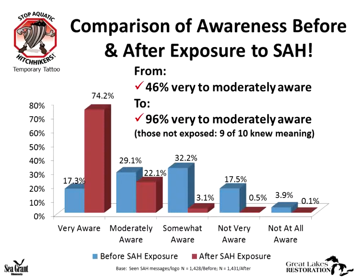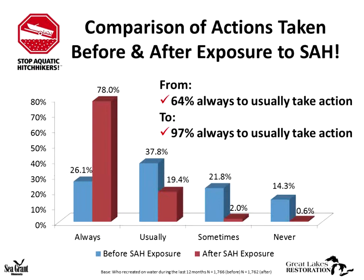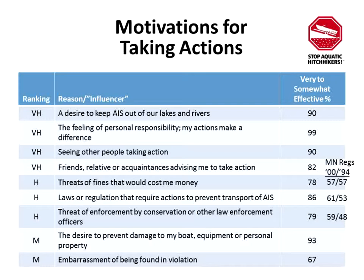We asked anglers about awareness before and after exposure to the Stop Aquatic Hitchhikers campaign. Anglers went from 46% very to moderately aware before exposure to 96% very to moderately aware after. This shows the value of capitalizing on the campaign brand to extend prevention messages and promote awareness. We then asked about behavior — before exposure, 64% always to usually took action; after exposure, 97% said they would always to usually take action in the future, showing that strategic communication using a heuristic approach can be effective in changing behaviors.